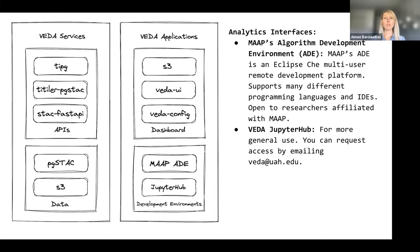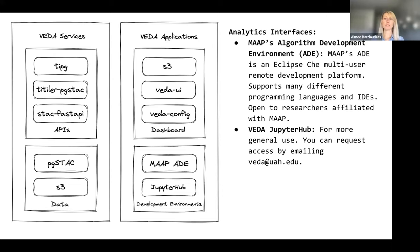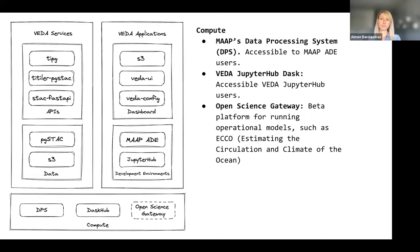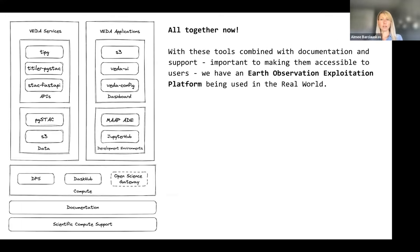These get bundled together and stored in S3, and then we use S3 static website hosting to host the dashboard. In addition to the dashboard, we have analytics interfaces - the MAP Algorithm Development Environment, which is an Eclipse Che multi-user remote development platform supporting many different programming languages and IDEs, open to researchers affiliated with MAP. We also have the VEDA JupyterHub for more general use. We have compute: MAP's data processing system, VEDA's JupyterHub disk system, and the Open Science Gateway - a beta platform for running operational models such as ECHO.